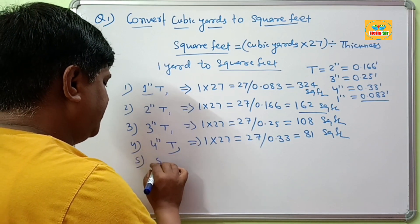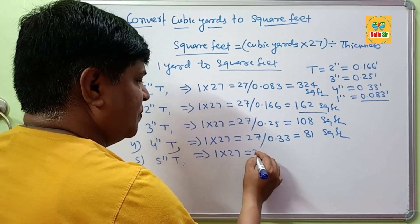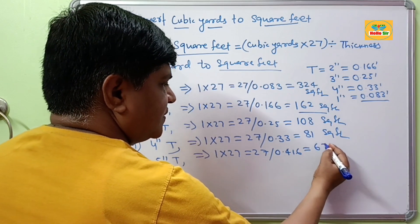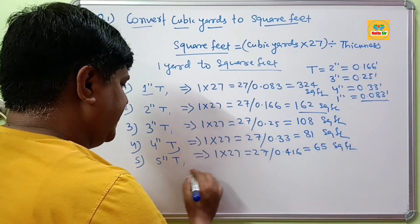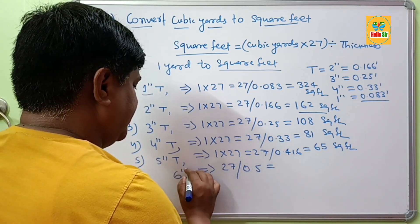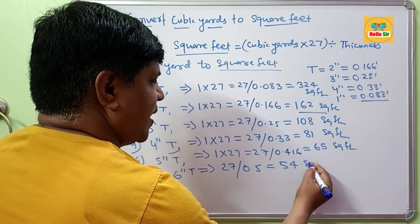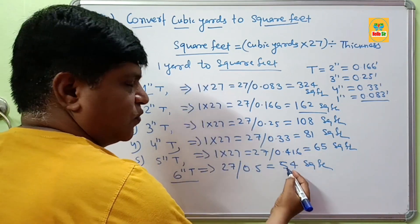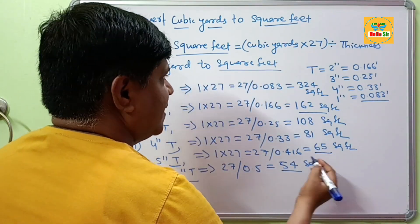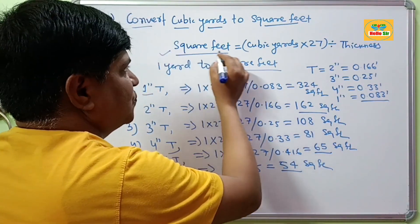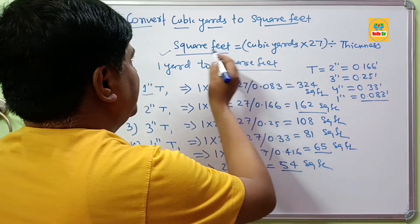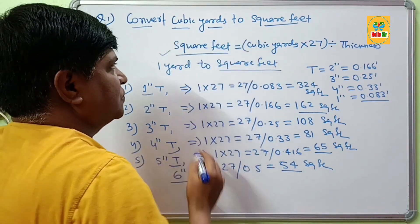At 5 inch thickness: 1 × 27 = 27, divided by 0.416 feet, which gives about 65 square feet. So 1 cubic yard equals 65 square feet at 5 inch thickness. At 6 inch thickness, 1 cubic yard equals 54 square feet. Using this formula — square feet equals cubic yards × 27 divided by thickness — you can simply convert cubic yards into square feet. Thank you.